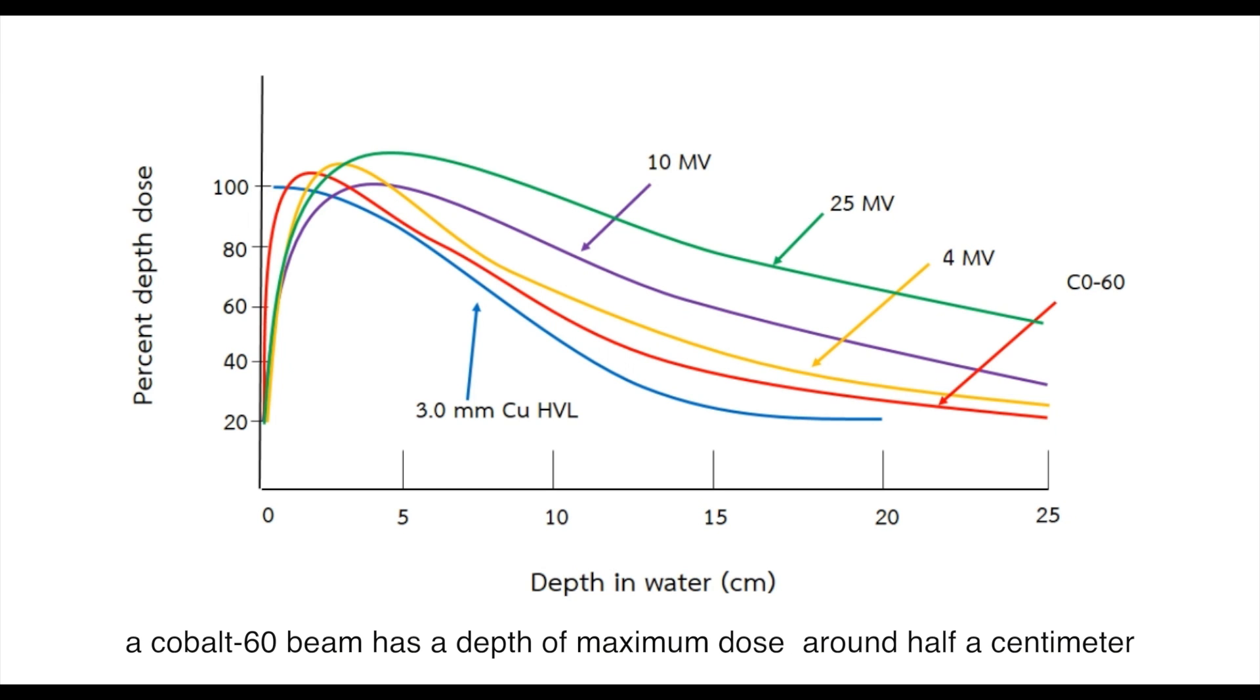A cobalt-60 beam has a depth of maximum dose around half a centimeter. A 4 megavoltage beam has a D-max around 1 centimeter. A 10 megavoltage beam has a D-max around 2.5 centimeters, and a 25 megavoltage beam has a D-max around 4 centimeters.